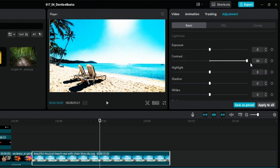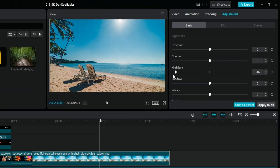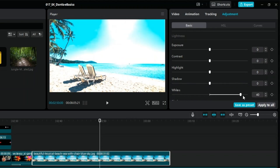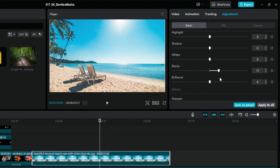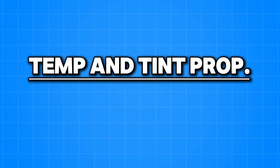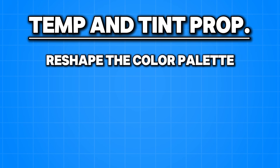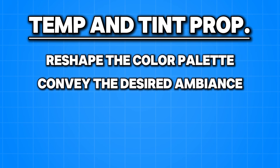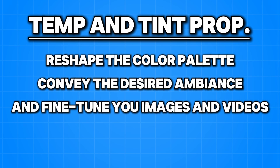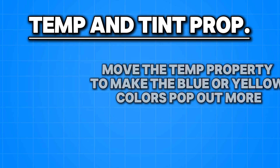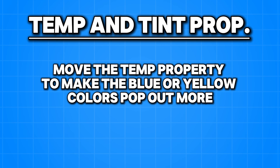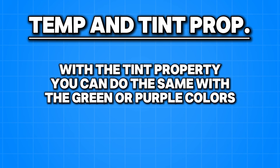You might find an excellently captured image or video to be below expectations or not what you initially want in your videos, so you need to master these adjustments to create the vibe you want. The temp and tint properties will help you reshape the color palette to precisely convey the desired ambience and fine-tune your images and videos. Basically, you can move the temp property to make the blue or yellow colors pop out more. With the tint property, you can do the same with the green or purple colors.